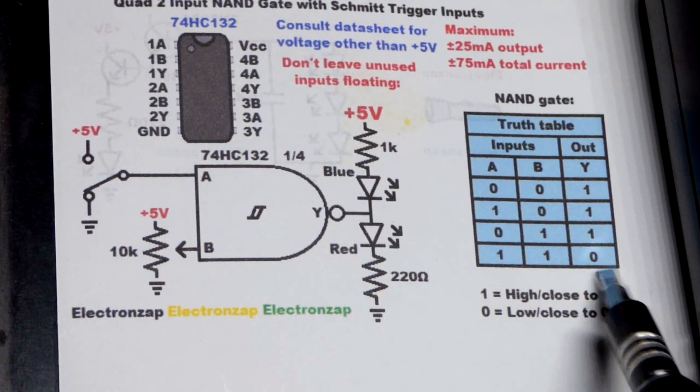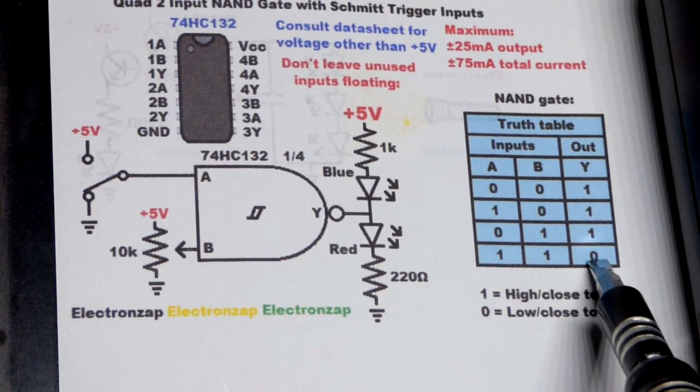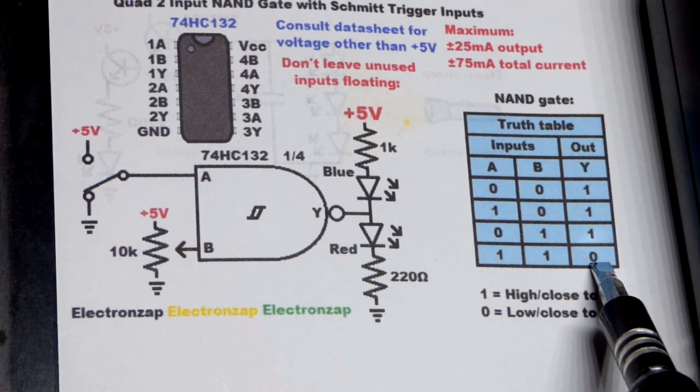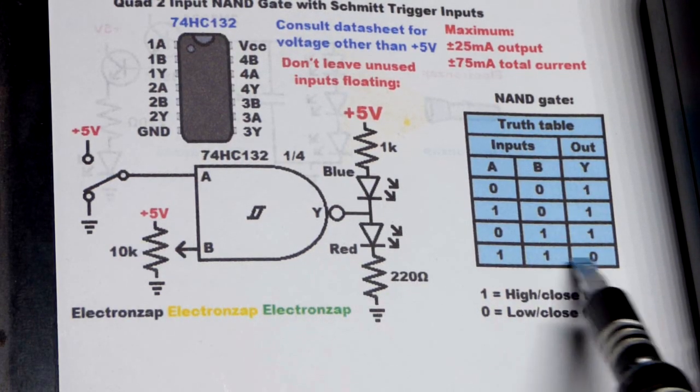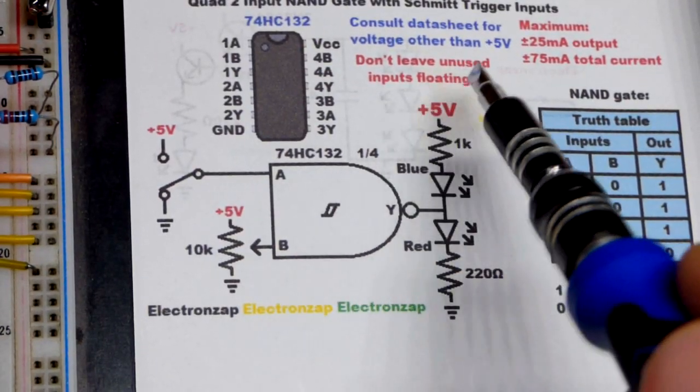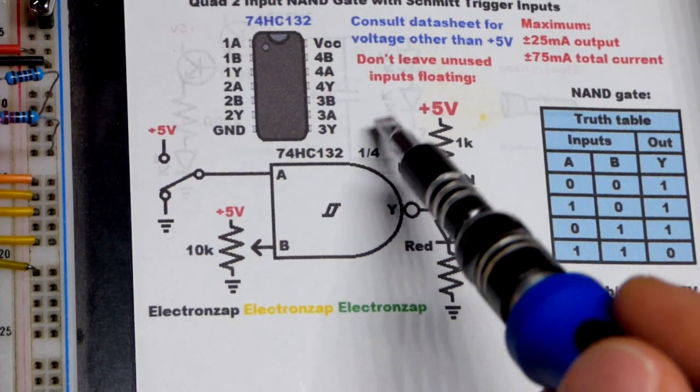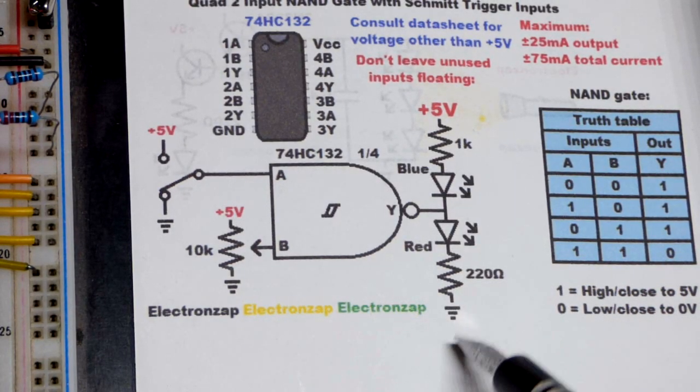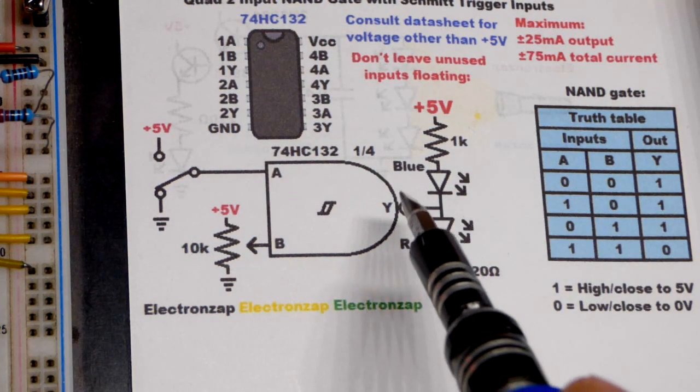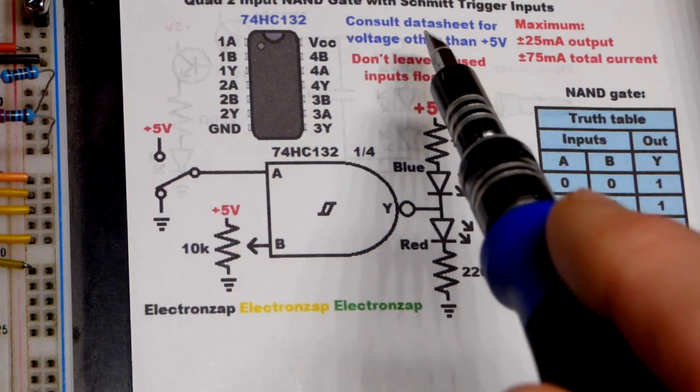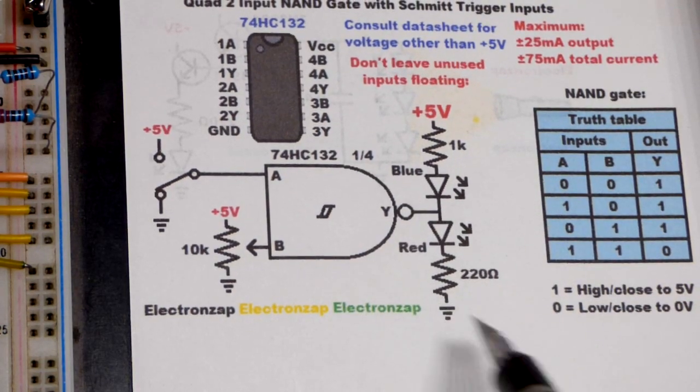So it's the opposite of an AND gate. An AND gate, those would be zeros and that would be a one. You would need all inputs high in order for the output to be high. This is the opposite. Now you need all inputs high in order for the output to be low. And as I usually do, when the output is high, it's as close to 5 volts as it can be right there, red LED lights up. And when the output is low, it connects to ground as good as it can right there, and the blue LED will light up.